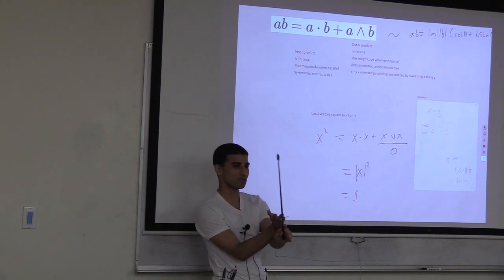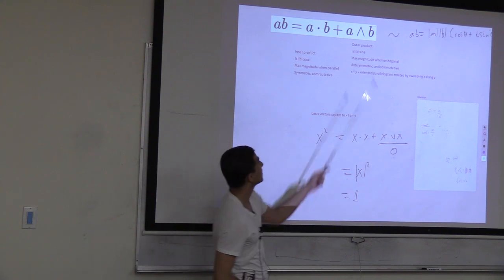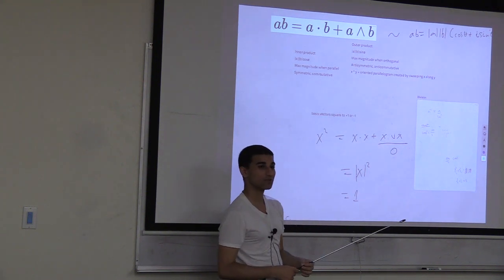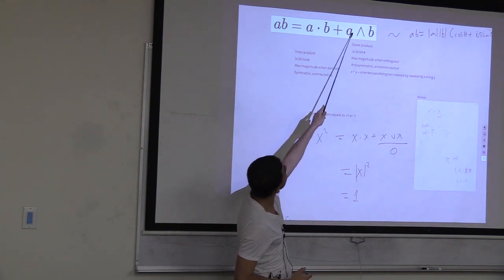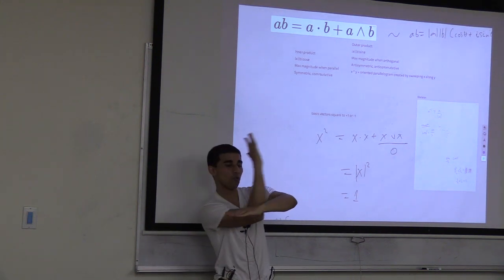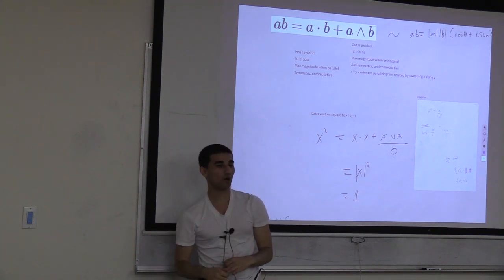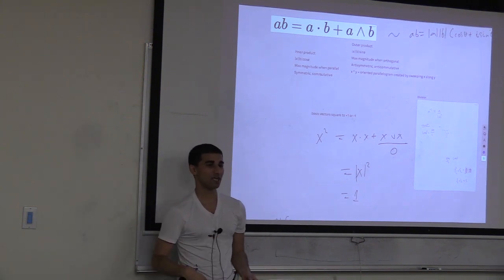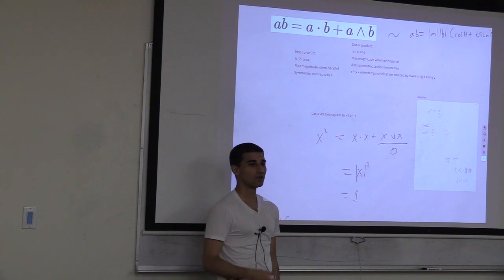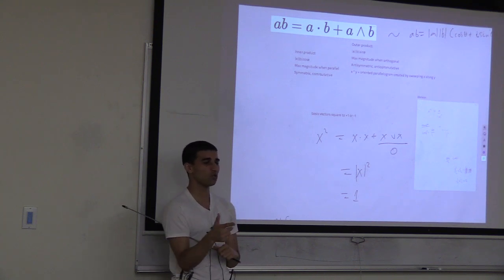The inner product measures similarity (like projection); this captures the second part - dissimilarity, like rejection. The wedge product is anti-symmetric: the outer product of two vectors corresponds to sweeping one along the other, which induces an orientation. Depending on which you sweep along which, the orientations are opposite - so A∧B = -B∧A.